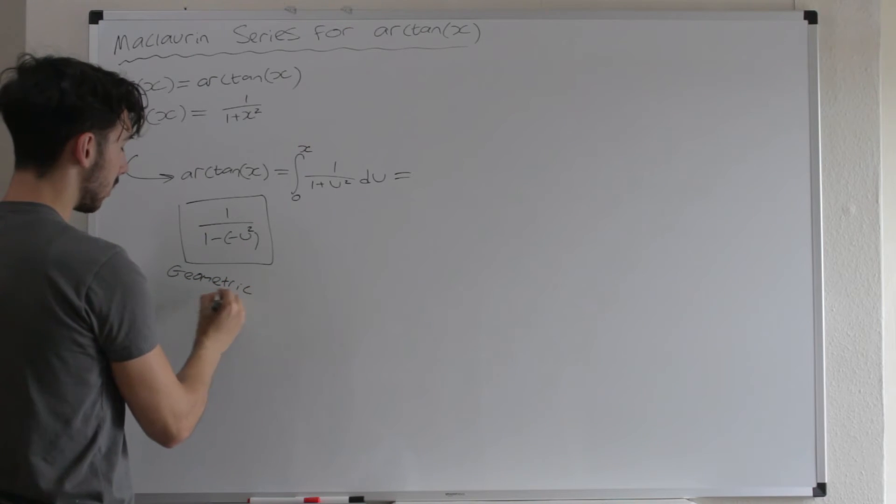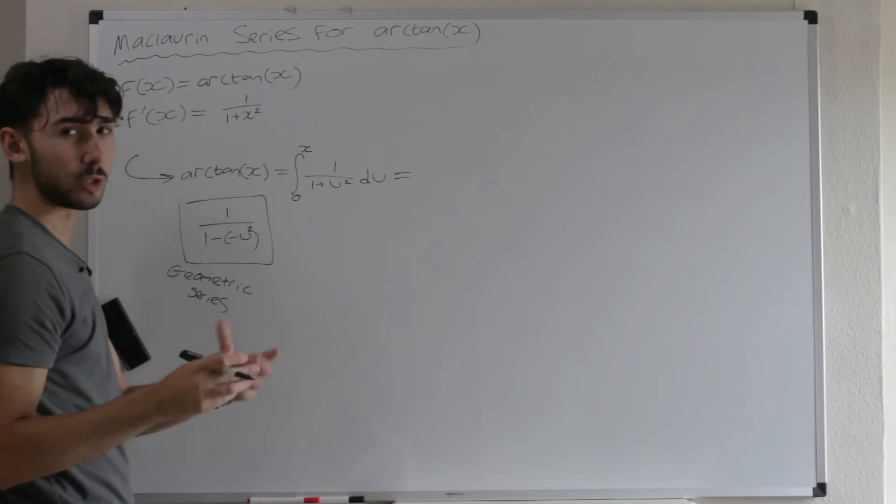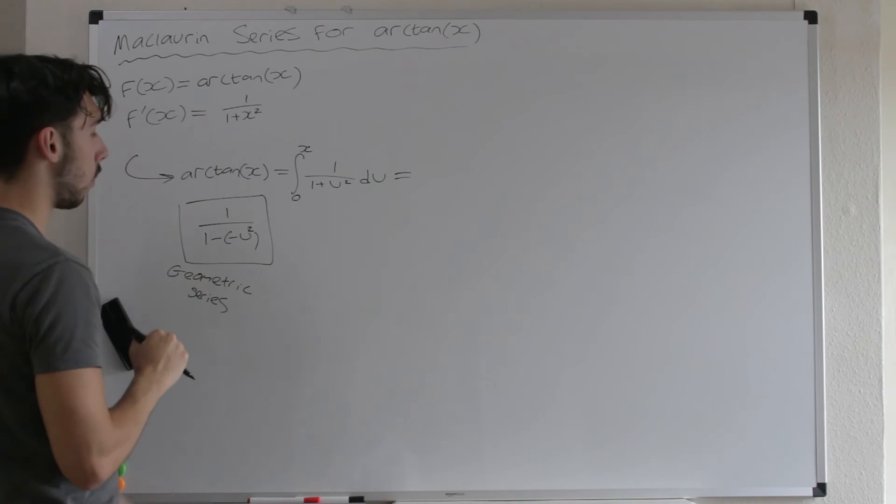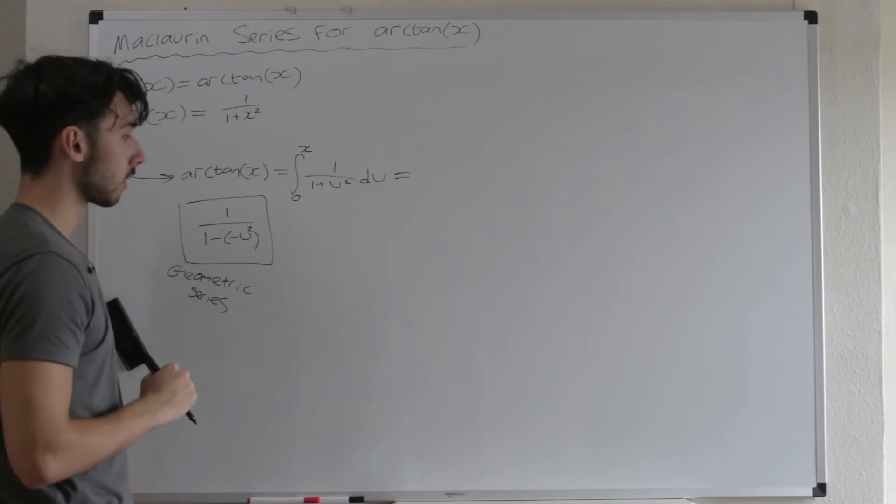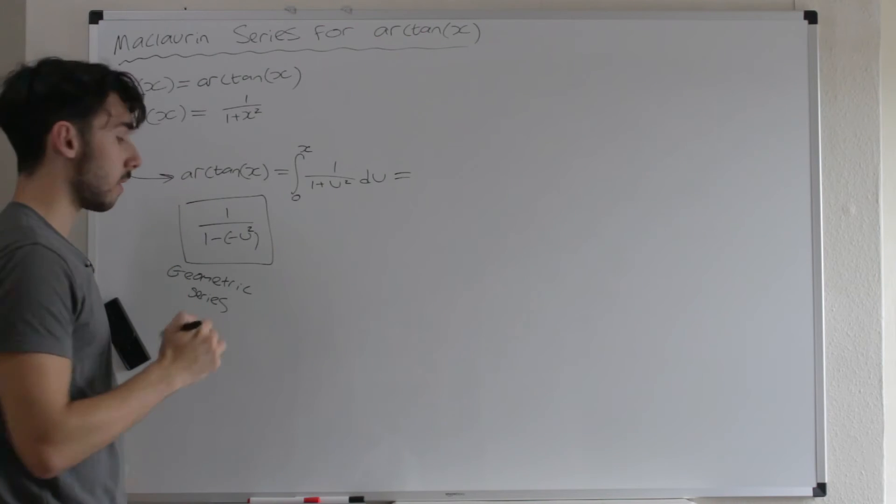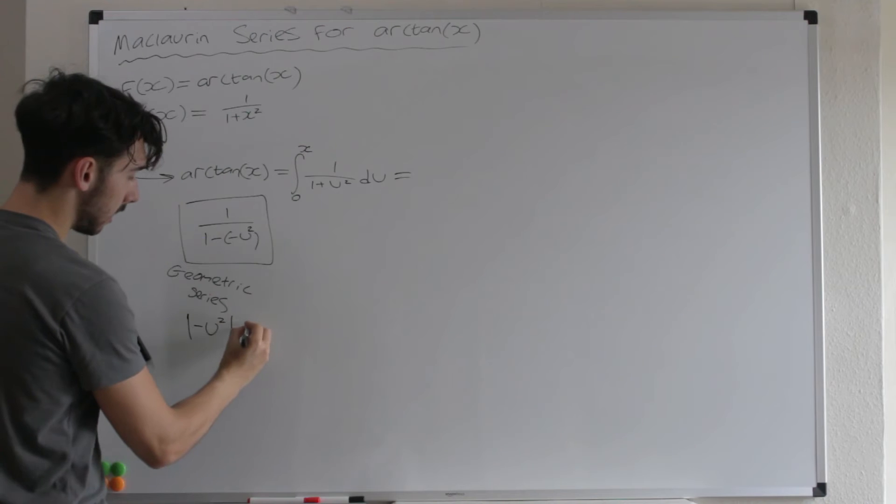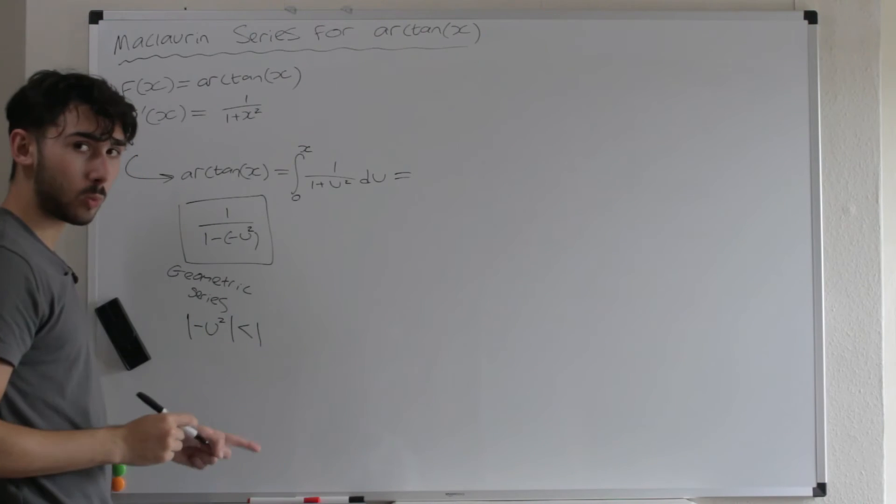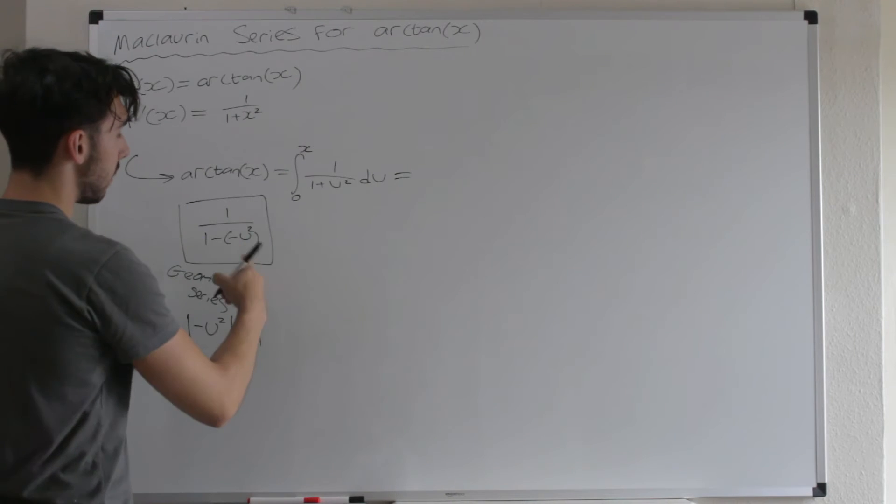It's a geometric series and it's convergent. This is the sum to infinity formula, but instead of A, it's 1. Some people also use U1. Instead of U1, it's 1. And instead of R, it's minus U squared. So as long as the modulus of minus U squared is less than 1, this will converge. Lovely. Okay, so let's just bear this in mind.